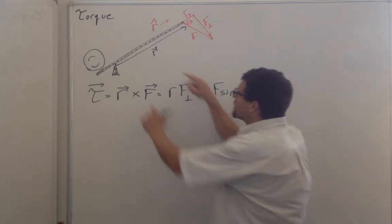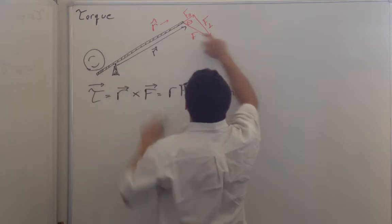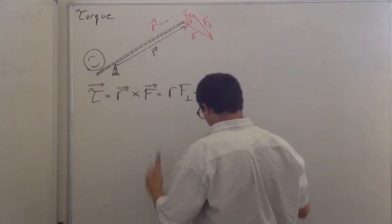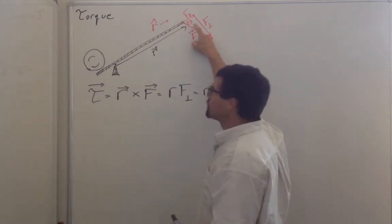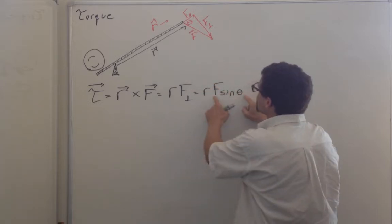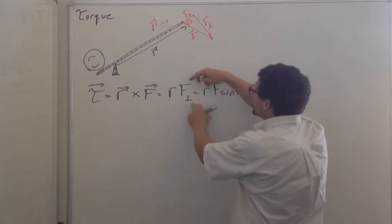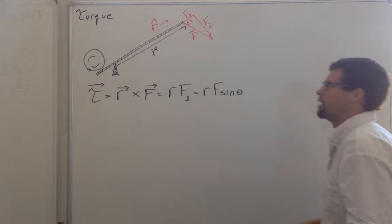And so that's what a cross product means. This vector times the other vector times the sine of the included angle. The sine of the included angle times the force gives you just that perpendicular component.